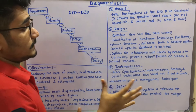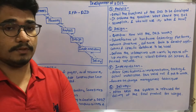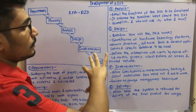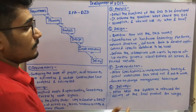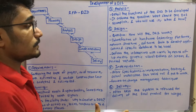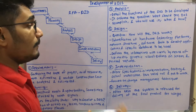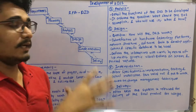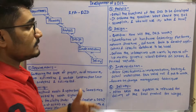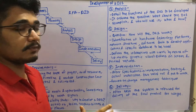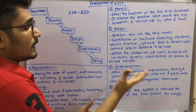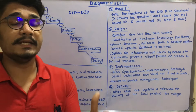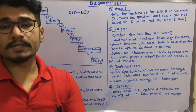The Design phase answers the question: how will the DSS work? In this phase you need to address the hardware architecture, the network, the security, and all those things. Identification of all hardware, technology platforms, network structure, software tools to develop applications, and specific databases that need to be used or upgraded is handled here. It also defines the interactions with users by means of input masks, graphical visualizations on screen, printed reports, and all kinds of output analysis techniques and graphical interfaces.